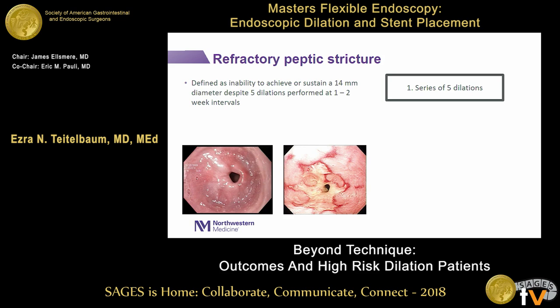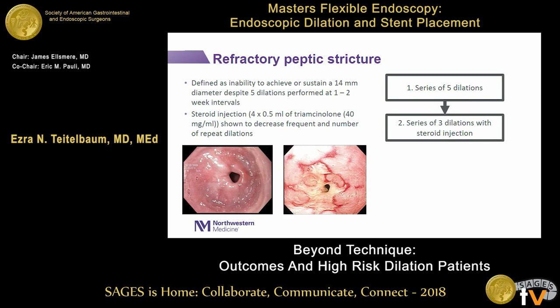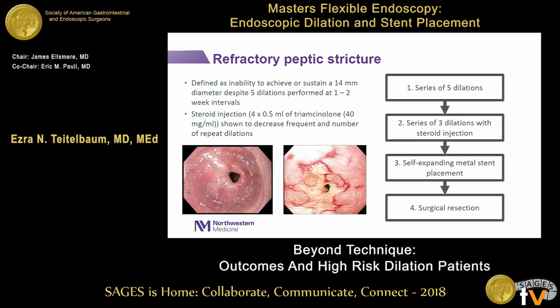For refractory strictures, one algorithm is a series of five weekly dilations; if that fails, three dilations with steroid injection. Evidence is mixed — a randomized trial showed steroid injection decreased the need for redilation, but other trials showed no effect. After three steroid-assisted dilations without response, consider stent placement or endoscopic stricture incision. The last resort is resection.